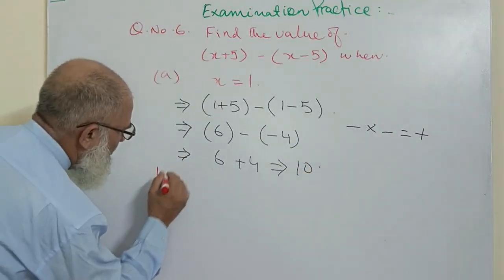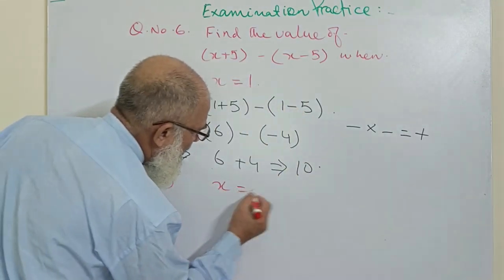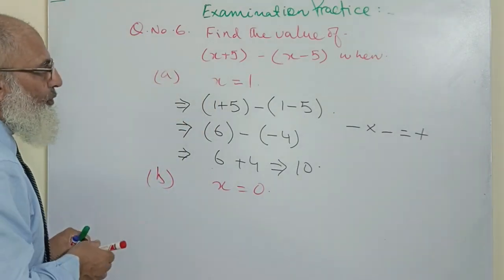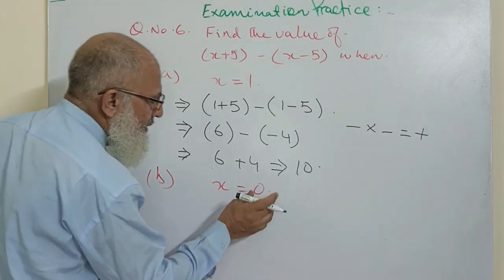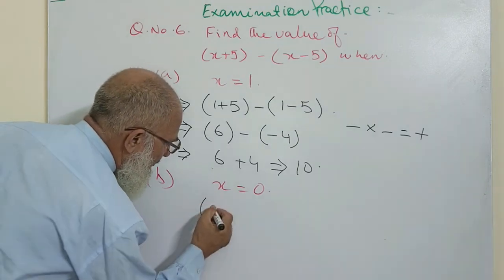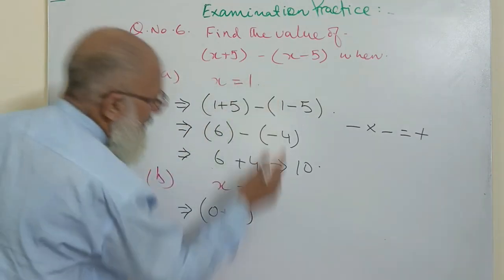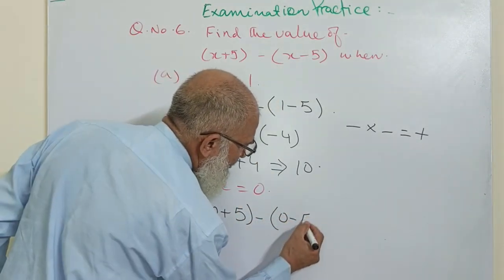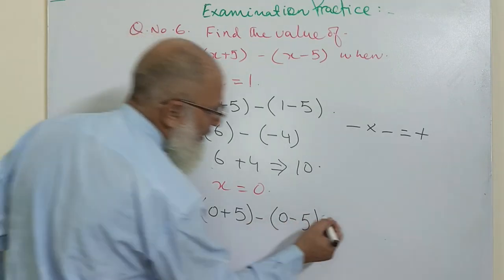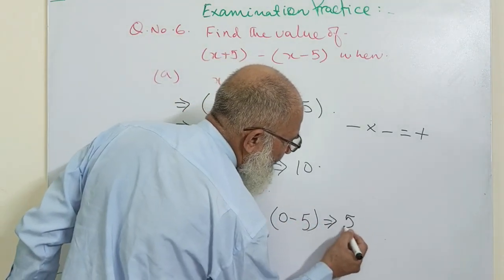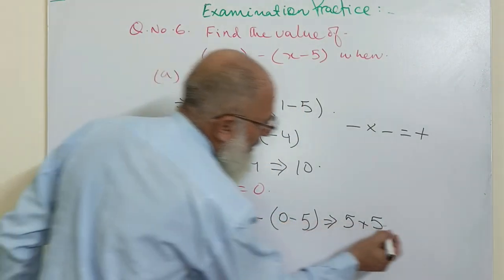Part B. What does part B say? x is equal to 0. When x is equal to 0, just put 0 instead of 1. We have 0 plus 5, minus 0 minus 5. That gives plus 5 and plus 5 — minus and minus gives plus. So it is again 10.